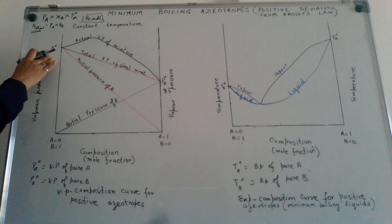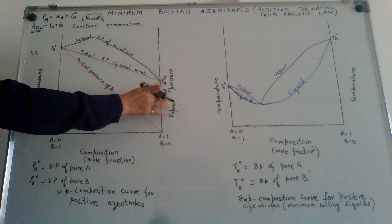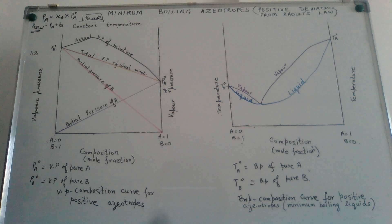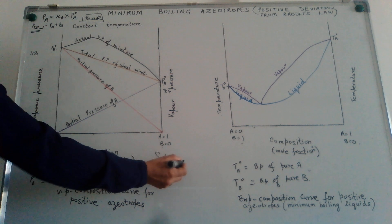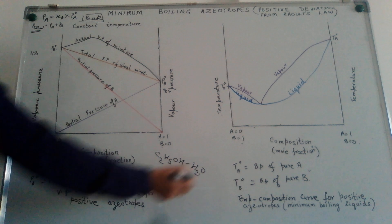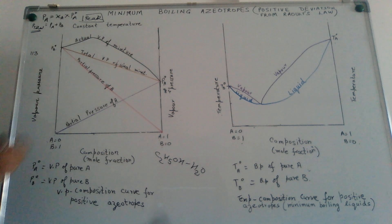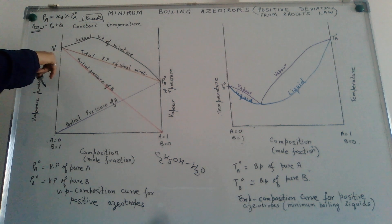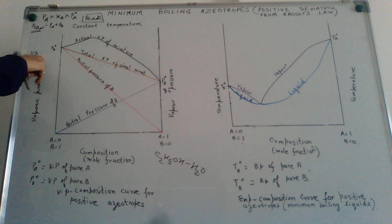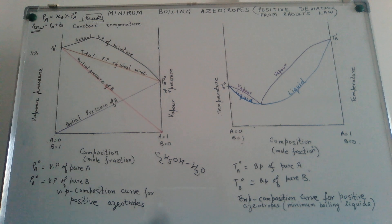In an ideal situation, the vapor pressure of the mixture should be in between 84 and 113. But when we talk about liquid solutions wherein there is positive deviation from Raoult's law. For example, we talk about ethanol and water. We notice that the vapor pressure of the mixture of ethanol and water goes higher than the vapor pressure of B over here. We have taken 113, so here the vapor pressure becomes even more than 113.